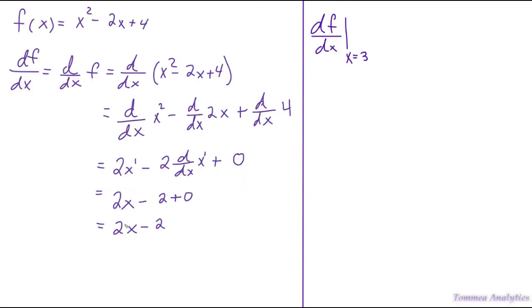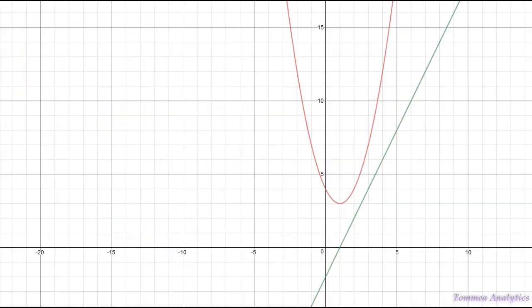Now if I want to plug in the value 3 into 2x - 2, I use this notation up here on the right. We've already found the derivative, which is 2x - 2, and the bar with x = 3 just means that we're going to plug in 3. So when we do that, we get 4. This 4 is the slope of a line — more specifically, it is the slope of a line that is tangent to this parabola at the point x = 3.